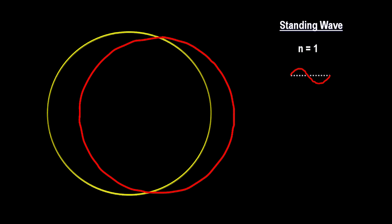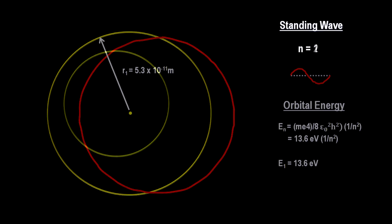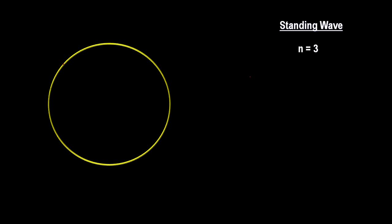The first energy shell would have to have the radius that creates the circumference that exactly fits one wave. The second shell would have to have the radius that creates the circumference that exactly fits two wavelengths. The third shell would have to have the radius that creates the circumference that exactly fits three wavelengths, and so on.